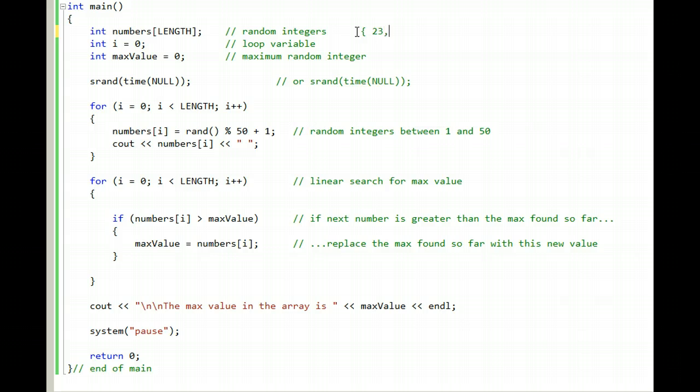Let's pretend that we have these numbers in the array. The first time around the for loop, i is zero, so we check to see if 23 is bigger than max value. Well, 23 is bigger than zero, so the variable max value is set equal to 23.